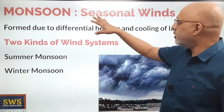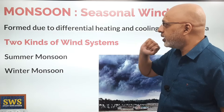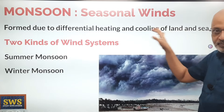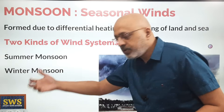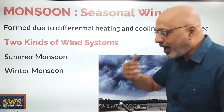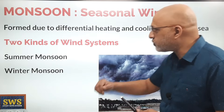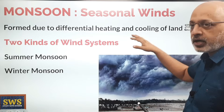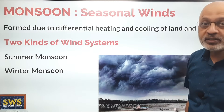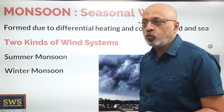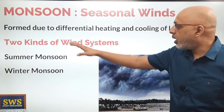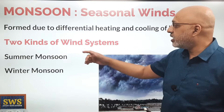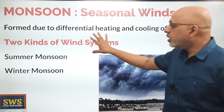The monsoon and seasonal winds are formed due to differential heating and cooling of land and sea. Because the temperature on sea is different from that of land, these monsoon winds — the different kinds of seasonal monsoon winds — are formed. There are two types: the summer monsoon and the winter monsoon.